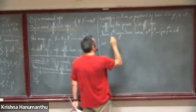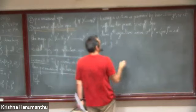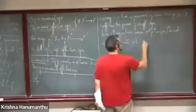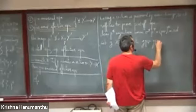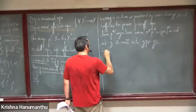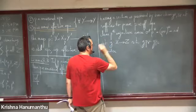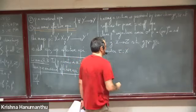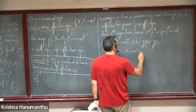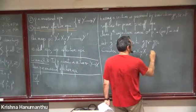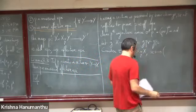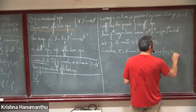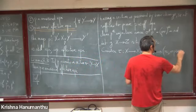Let G: X → Z satisfy G∘P1 = G∘P2, and consider the morphism τ from X to the fiber product X ×_Y X which sends any x to (x, σ(P(x))).